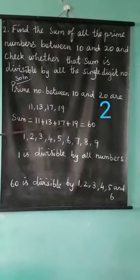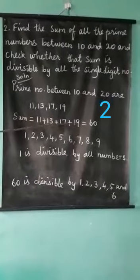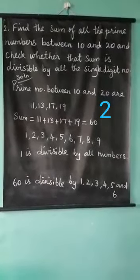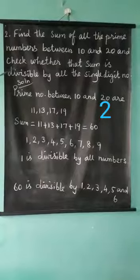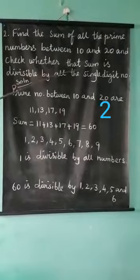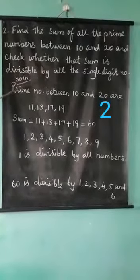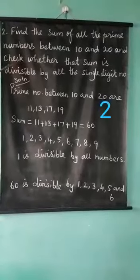Adding the 4 prime numbers, the answer is 60. Understood? So, the next statement: check whether that sum is divisible by all the single digit numbers.